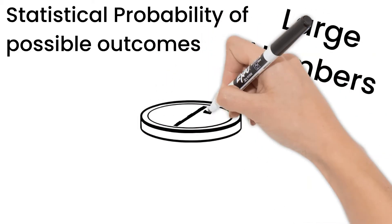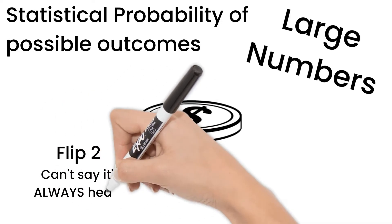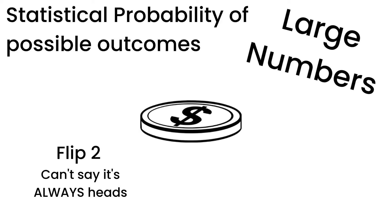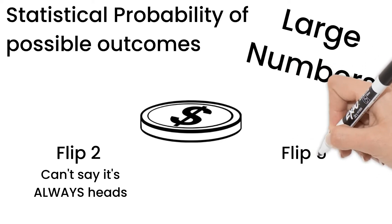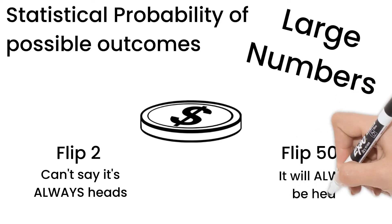If you flip a penny twice and both times it lands on heads, you wouldn't say this penny can only land on heads. You only flipped it twice. But if you flip the penny 5,000 times and it was all heads, then you could say it is a trick penny and it will always land on heads. As with that high of a number, you should see 50% heads and 50% tails for a normal penny.